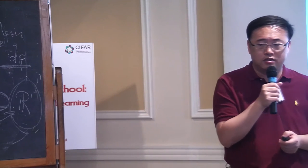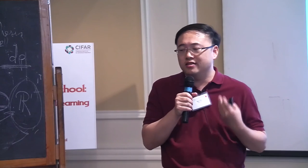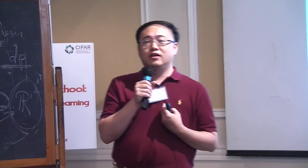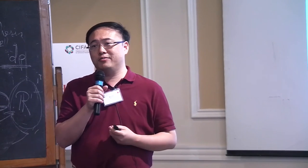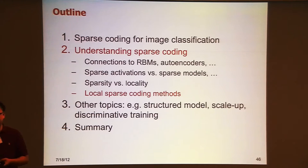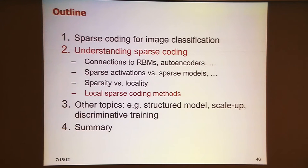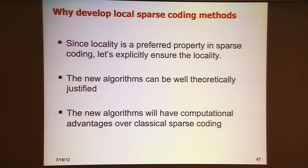If we explicitly enforce some locality constraint, you get two things. First, the result is sparse. Second, the coding will be much more stable than standard sparse coding. Since locality is the preferred property in sparse coding, let's explicitly ensure locality. The new algorithm can be well theoretically justified, and will have a computational advantage over classical sparse coding.